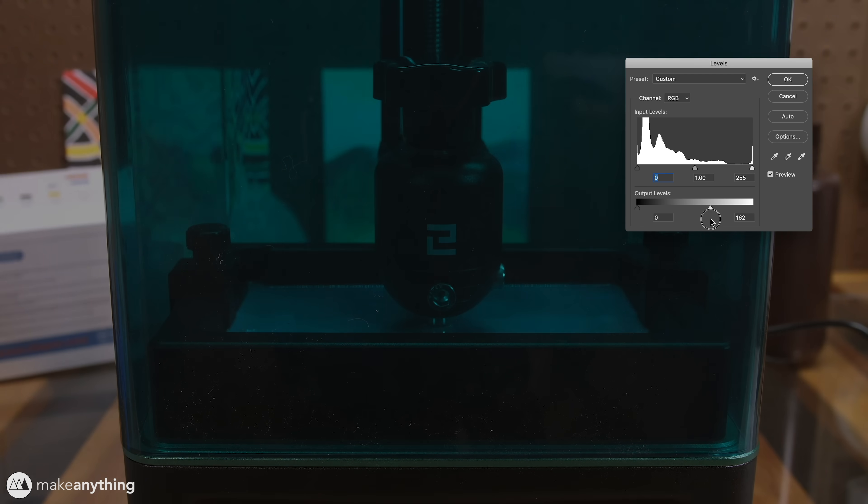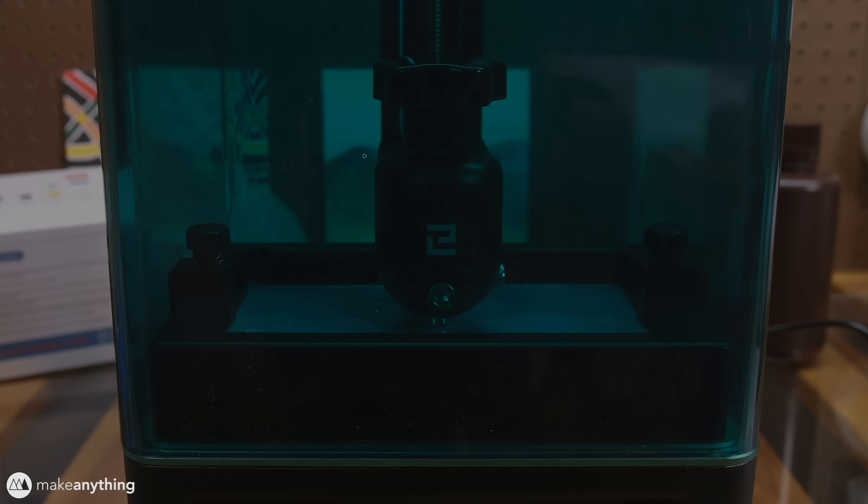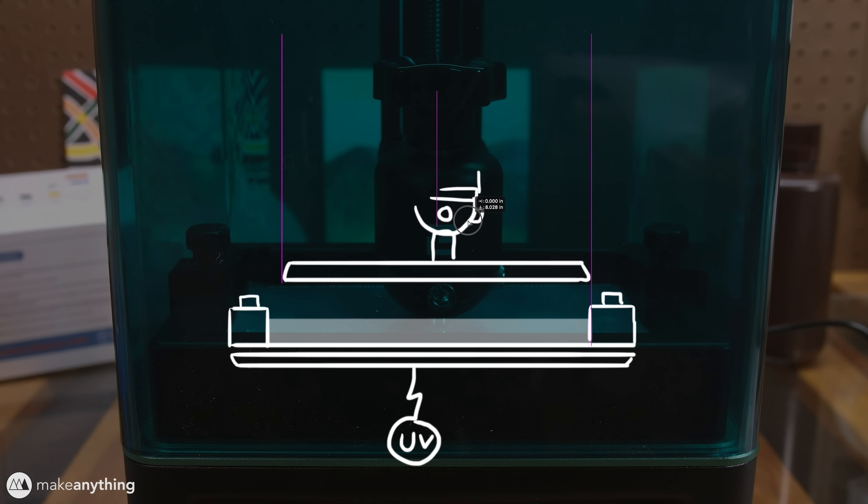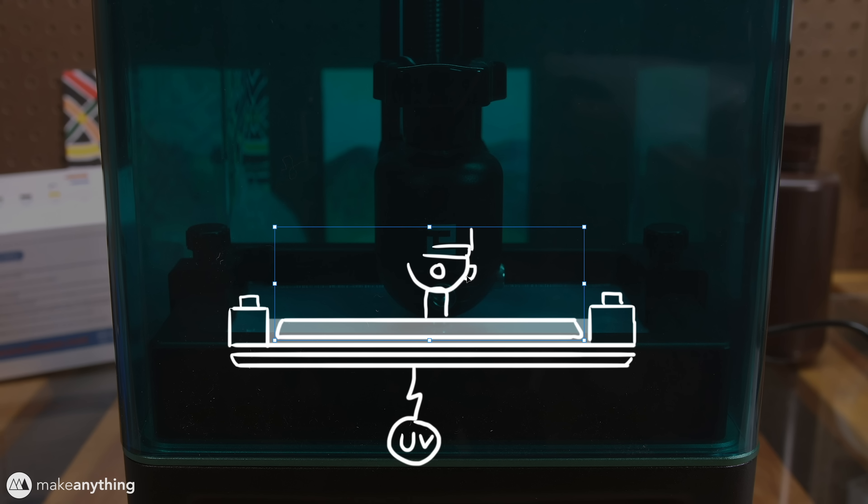Well I guess now is a good time to explain exactly how a DLP printer like this works. As you saw the build plate of this printer is actually suspended upside down and it moves up and down along this Z axis. Then at the bottom of the printer we have our vat which has a clear film on the bottom. Directly underneath that film we have this UV LCD screen. We'll fill up our vat with a photopolymer resin.